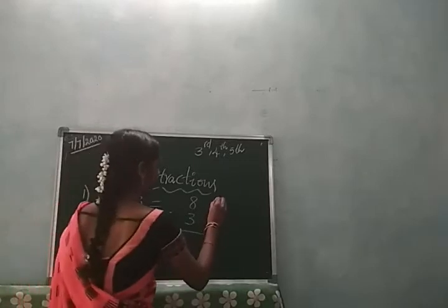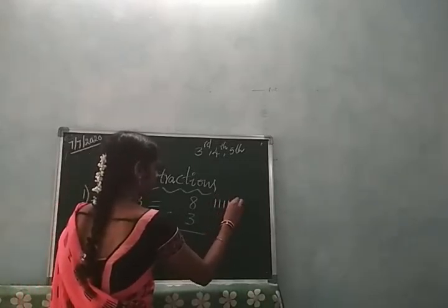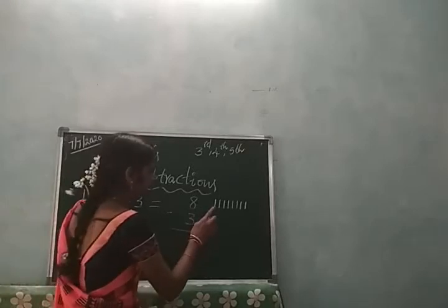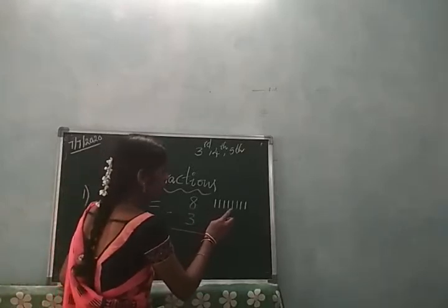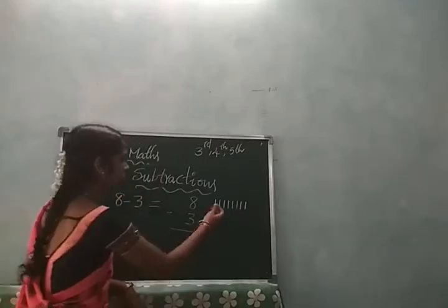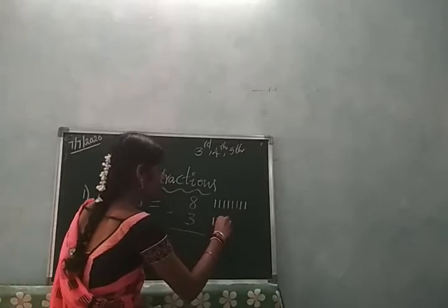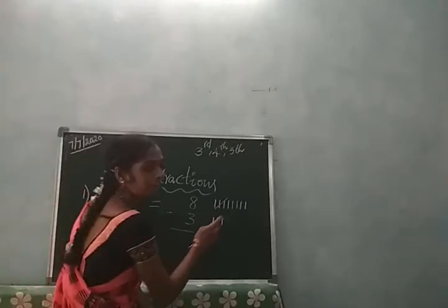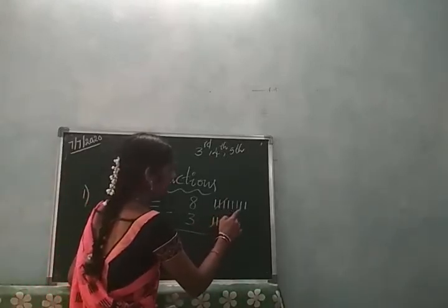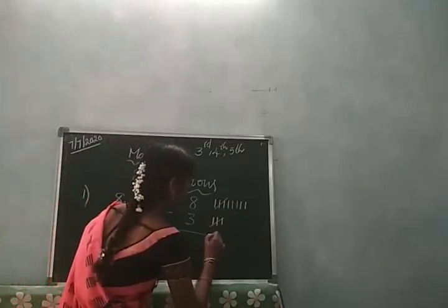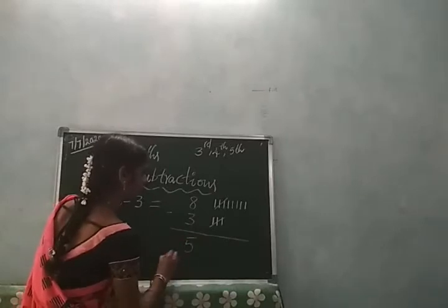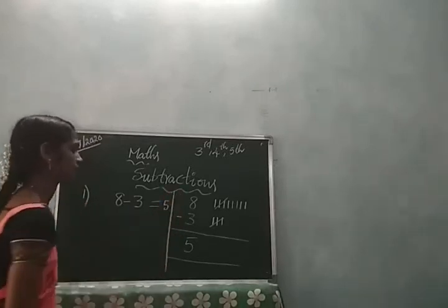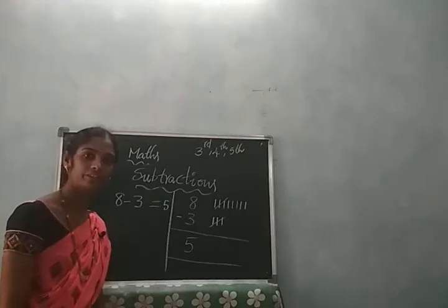Then let me show you with sticks. I will take 8 sticks: 1, 2, 3, 4, 5, 6, 7, 8. Now I will take away 3 sticks. How many sticks are remaining? 1, 2, 3, 4, 5 — there are 5 remaining. So 8 minus 3 is equal to 5.